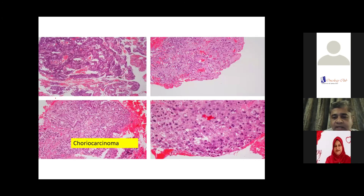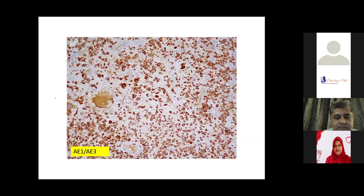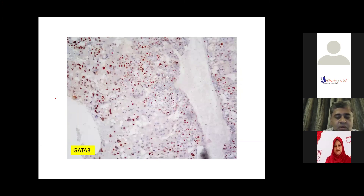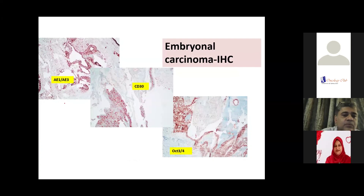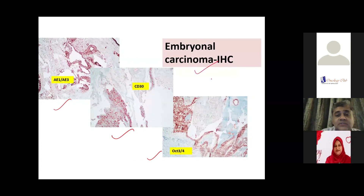This is a picture of choriocarcinoma with highly malignant-looking cells and nuclei — these are positive for AE1/AE3, keratin positive, and GATA3 is important for these markers. The clinical setting of beta-HCG is important to confirm the diagnosis. Embryonal carcinoma has the most bizarre-looking tumor cells — positive for AE1/AE3, CD30, and OCT3/4. These markers are employed in the lab. Importantly, if you have a sizable component of embryonal carcinoma, those tumors fall into an intermediate to poor risk category and would require a higher regimen or higher number of cycles of chemotherapy.